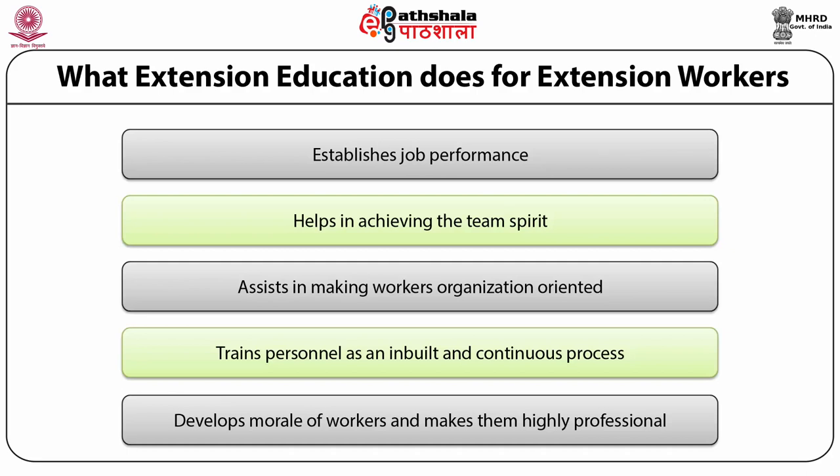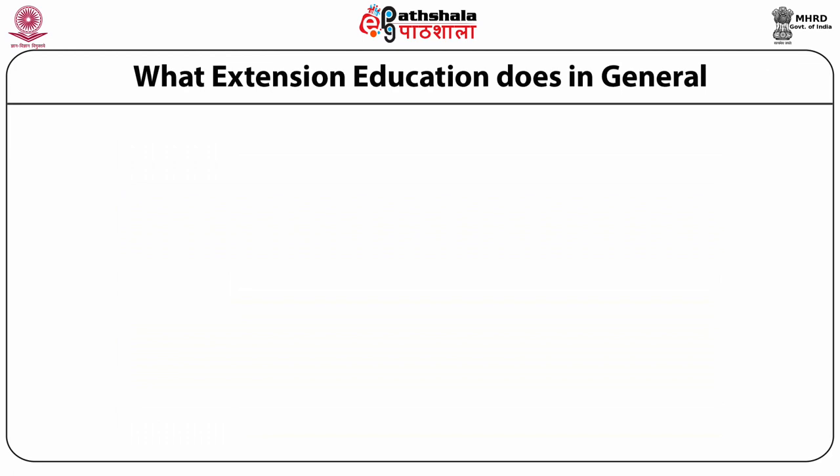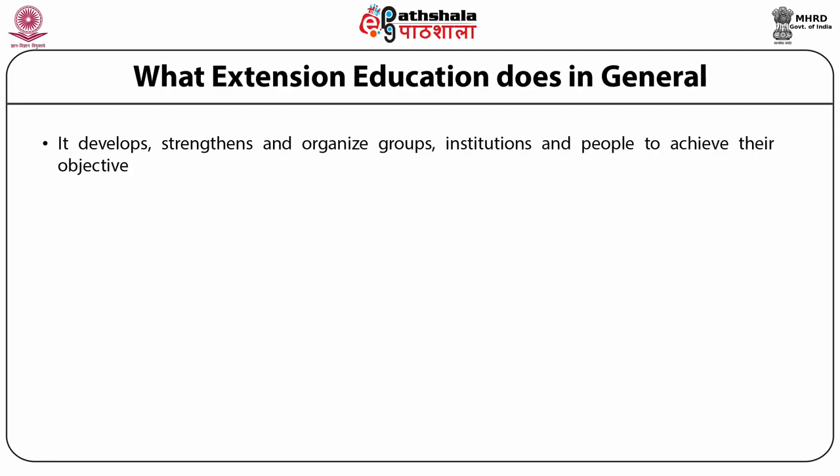The ultimate goal of extension is to achieve development. Now let us look into what extension education does in general. It develops, strengthens, and organizes groups, institutions, and people to achieve their objectives. In general, extension favors the institution-building process. If the institutions are strong, they provide the base for further events. When we look into approaches of extension like cooperative societies, group approach, participatory approach, self-help groups, farmers interest groups, etc., all these efforts aim at building an institution. Through these institutions, development thinking is promoted and ultimately the intended development is achieved.